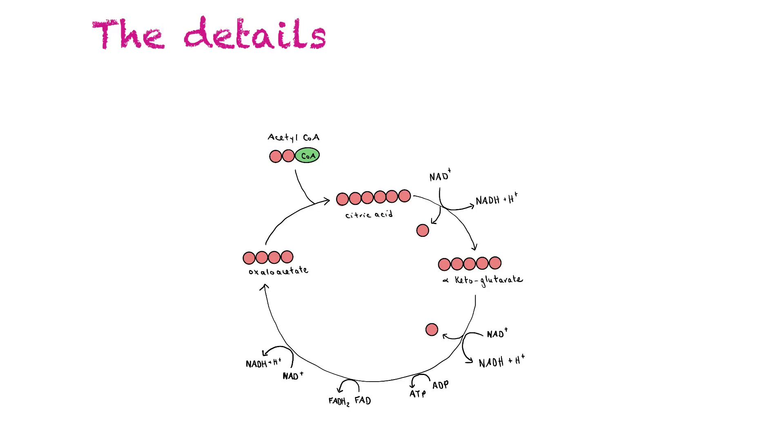So the very first step of this reaction is that the acetyl portion of acetyl coenzyme A combines with this four carbon molecule which is known as oxaloacetate and they combine together and form citric acid. The coenzyme A leaves back to the link reaction, like we mentioned, to pick up more acetyl groups so this cycle can happen over and over again.